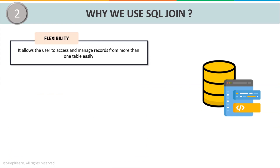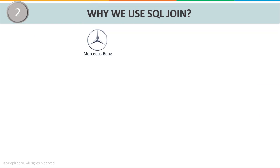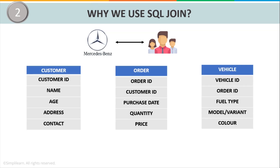Why do we use SQL Join? First, flexibility. SQL Join allows the user to access and manage records from more than one table easily. Consider Mercedes-Benz, one of the leading car manufacturers in the world. If they want to access vehicle details of a customer, they would need to query the customer table to get the customer ID, then query the order table to get the order ID, and finally get the vehicle details. This is a time-consuming and hectic process. Instead, by simply joining these tables, users can combine rows from two or more tables based on conditions, making it easy to access and manage records.